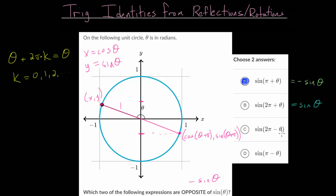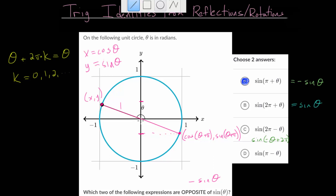The next two are a bit more complicated since we're dealing with minus theta. It might be helpful to rewrite choice C as negative theta plus two pi. If this angle is theta counting counterclockwise, then negative theta counts in the clockwise direction, landing below the negative x-axis. We can draw that ray from the origin to a point on the unit circle. This angle below and theta above would be equal to each other, and this angle is negative theta.